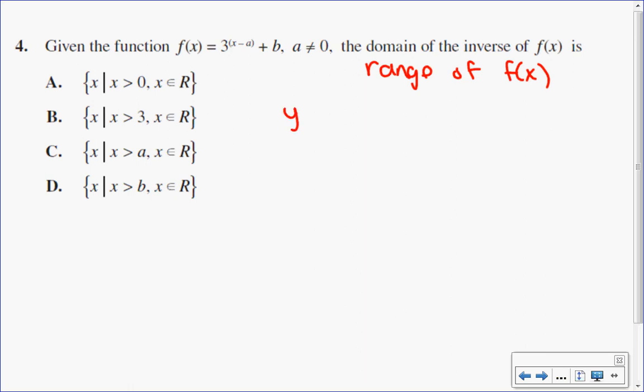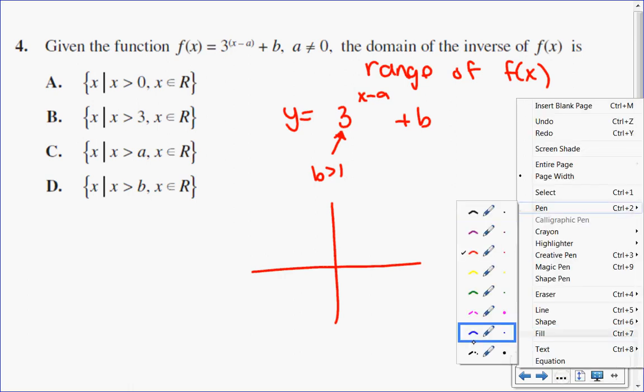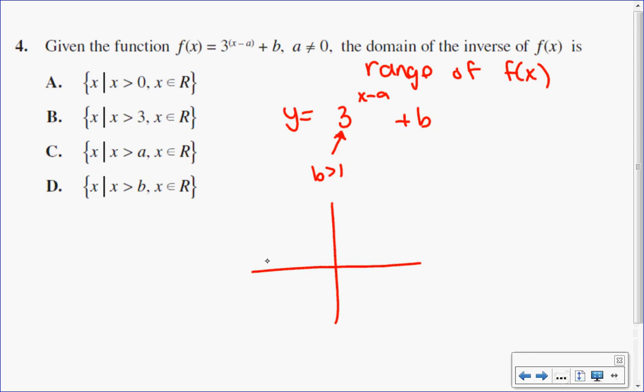So I have this function 3 to the x minus a plus b. First thing I notice is that my base is 3, and since it's greater than 1, it's an increasing exponential graph. So I don't know what a and b are, so I'm just going to draw a really rough sketch of what it might look like. So I have an increasing graph, something like that, with a y-intercept at 1.